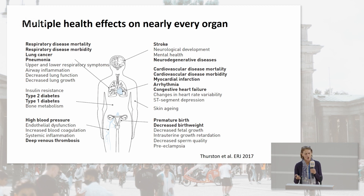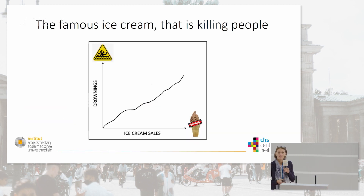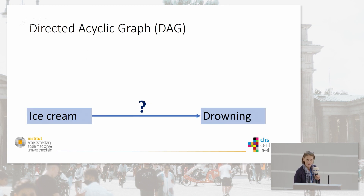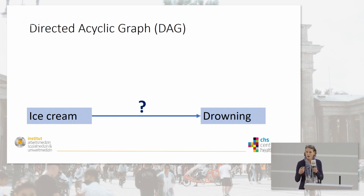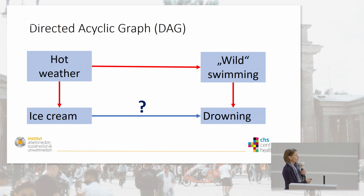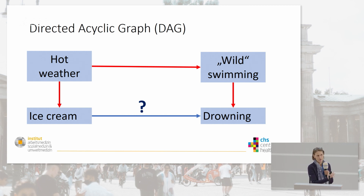I Googled 'cause or correlation' and what you invariably get are shocking news which, to the uneducated eye, imply that eating ice cream is causing drowning. Of course, we are educated people. With our subject matter knowledge, we draw a DAG to analyze this question. Hot weather causes ice cream consumption, and hot weather also causes wild swimming in unprotected waters, which causes drowning. So we know this is a confounded pathway and that ice cream is not the cause of drowning.